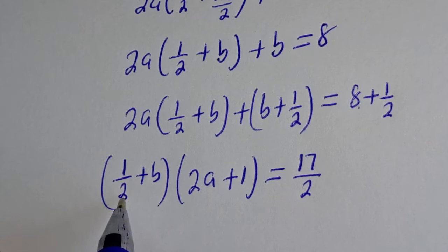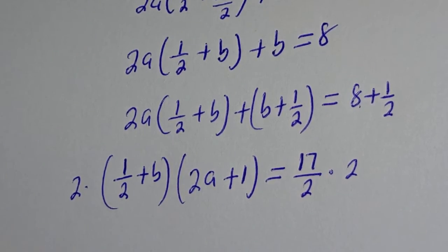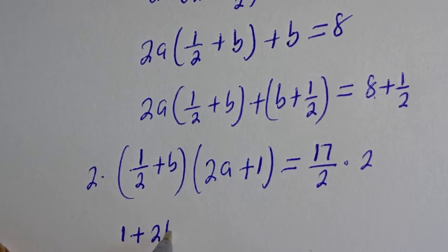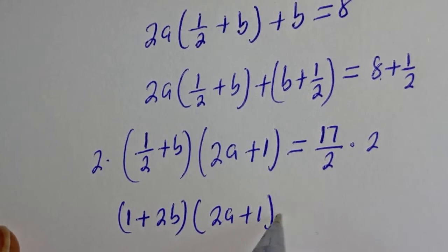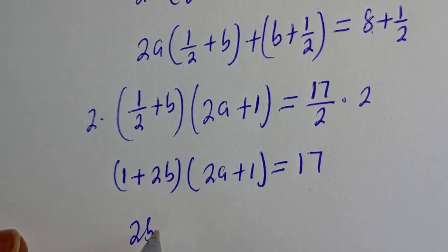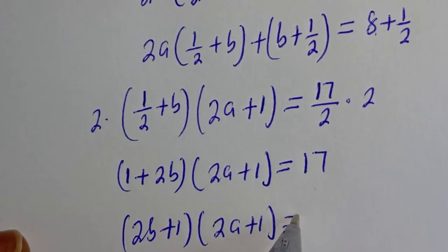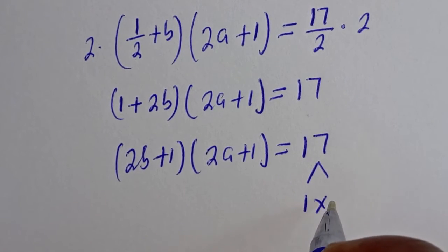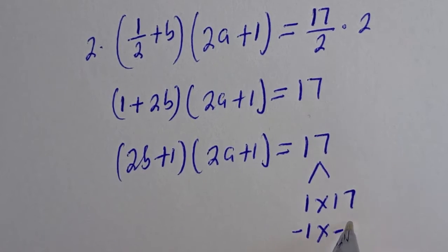So we want to remove these 2s. Let's multiply both sides by 2. Then this is 1 plus b bracket times 2a plus 1, is equal to 17. And this can be written as 2b plus 1 bracket times 2a plus 1, is equal to 17. But 17 can be written as 1 multiplied by 17, or minus 1 multiplied by minus 17.